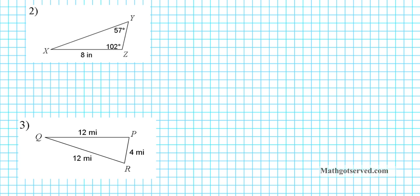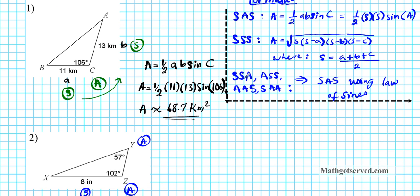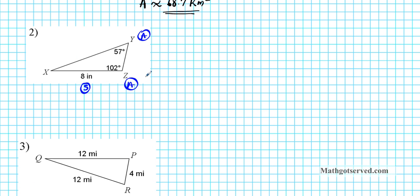Let's take a look at question number two. What situation do we have here? Let's label what we have: we have a side, an angle, and an angle. This is an SAA situation. So what are we going to do here? It requires some work. As indicated earlier, if we have SAA, we have to convert it into an SAS situation so we can apply the area formula. Which side do you want to find? Well, it depends on the angle that you want to use.